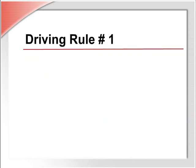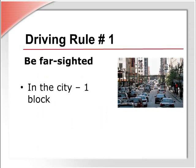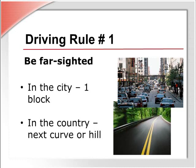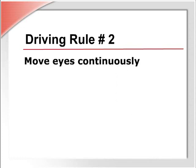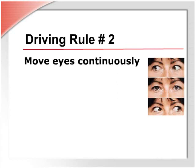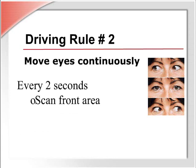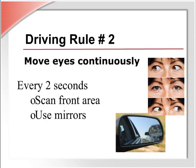Let's take a look at five basic driving rules that will help you stay safe on the road. Rule number one: be farsighted. If you are not looking far enough ahead, you will not have time to react to what is coming. In the city, look ahead about one city block; in the country, look ahead to the next curve or hill as far as you can. Rule number two: move your eyes continuously. Since you can only see clearly with your central vision, it is important to constantly shift your focus, including turning your head when necessary. Don't stare — every two seconds you should scan the area in front of you to look for hazards. Use your mirrors frequently to keep alert to what is coming around you. Check your sides, especially when approaching an intersection.